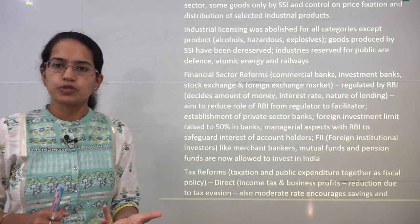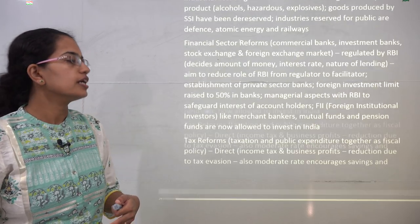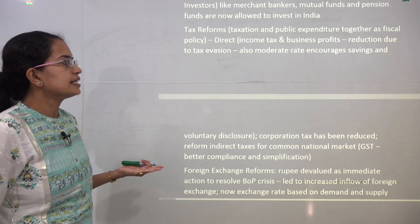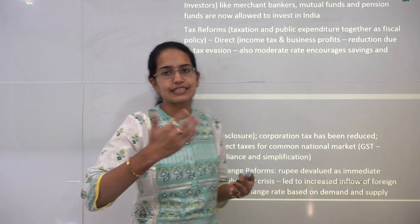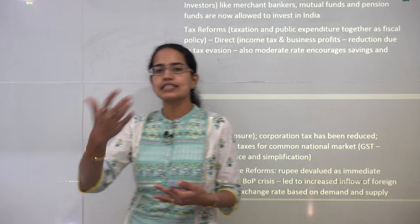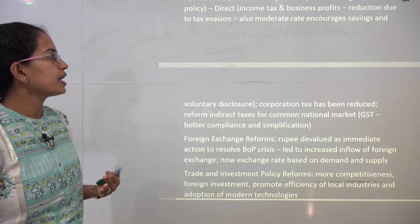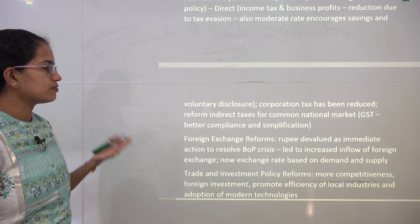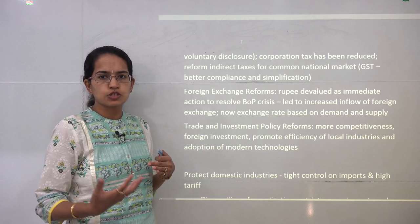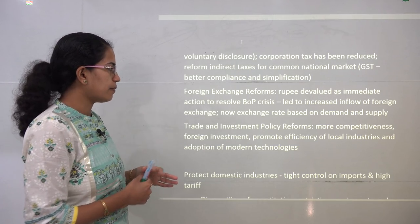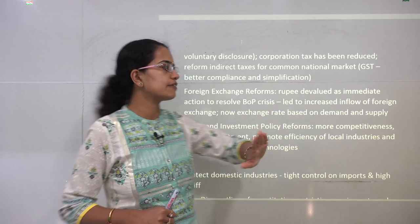In the taxation sector, corporate tax was reduced and indirect tax was simplified — further simplified with GST. Direct tax was structured so that people would not do tax evasion; ultimately tax rates were reduced so that people would voluntarily disclose their income amounts.